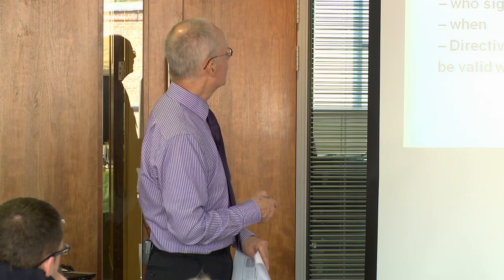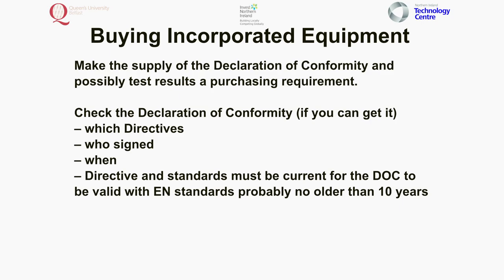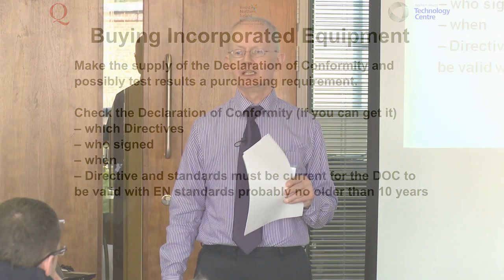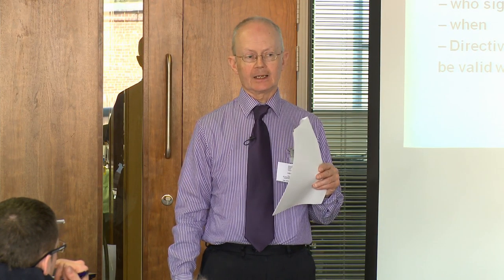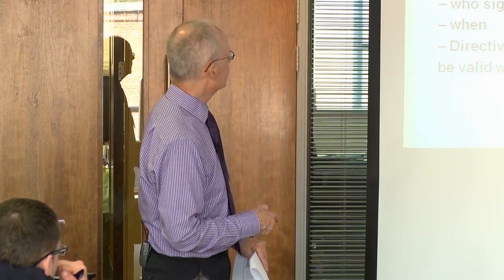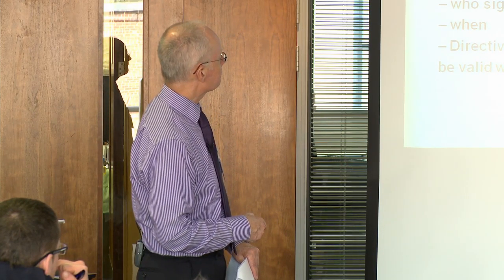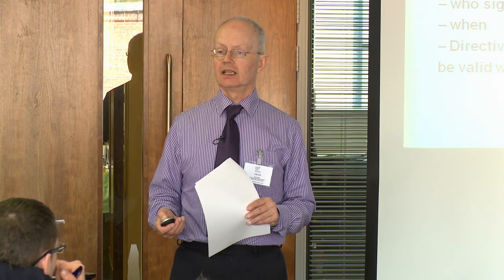I don't make any apology for emphasising this because it's a very important point. If you've bought something and then request the declaration of conformity, best of luck — because they have no legal requirement to actually give it to you. If you make it a requirement before you buy it, 99% of the time you will actually get it. And those that won't supply it — you know there's something wrong. They can't put it on the market if there isn't a declaration of conformity.